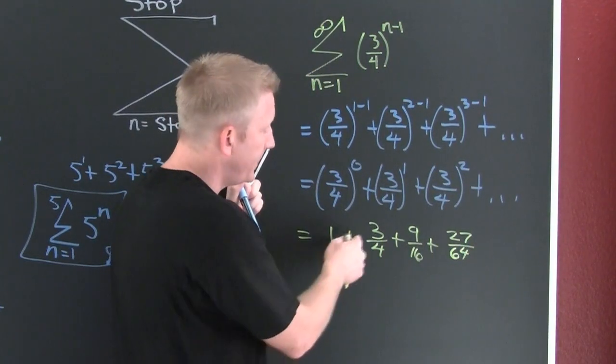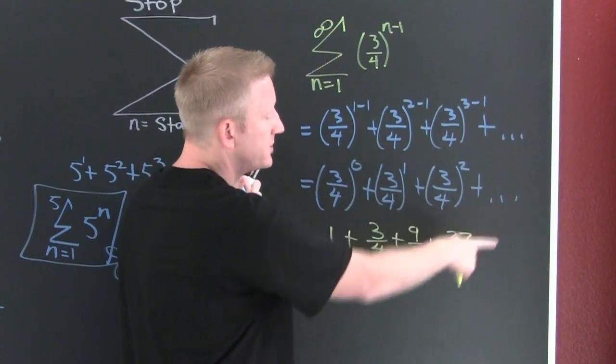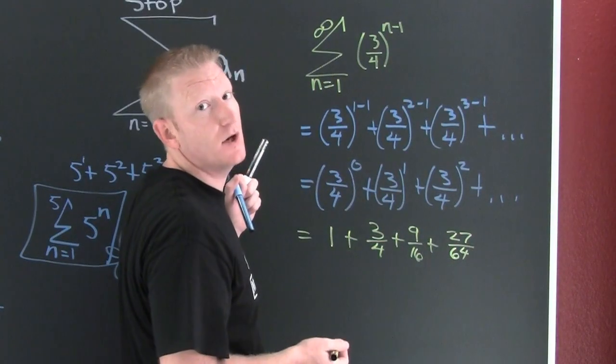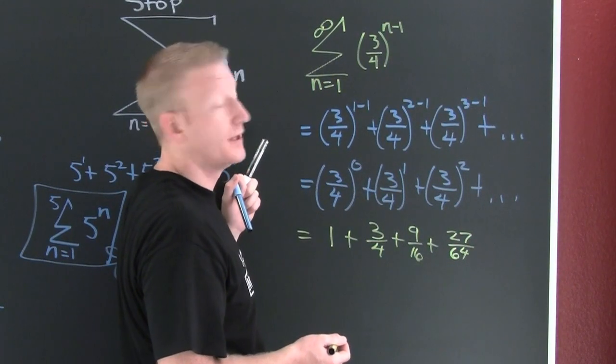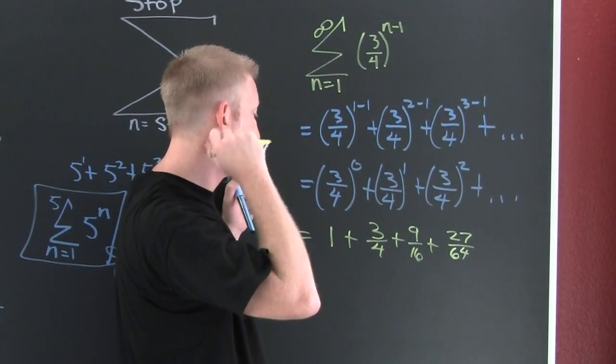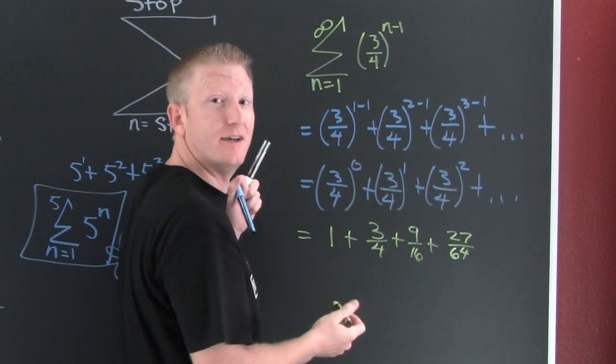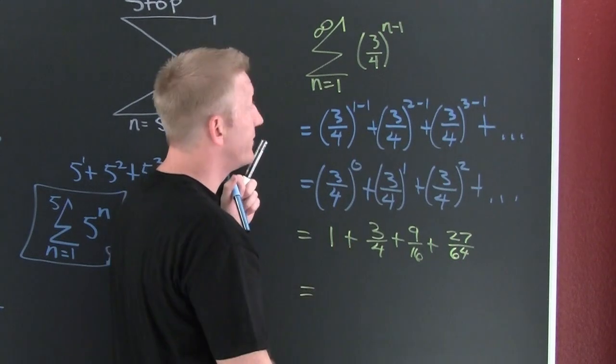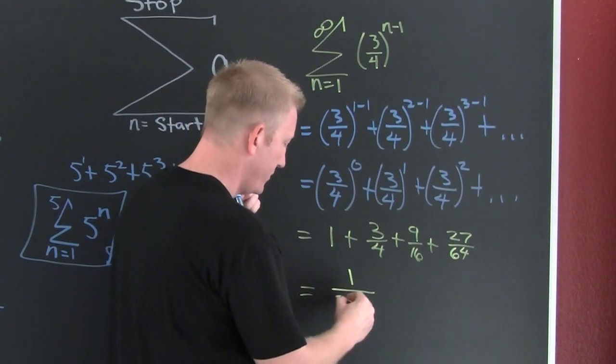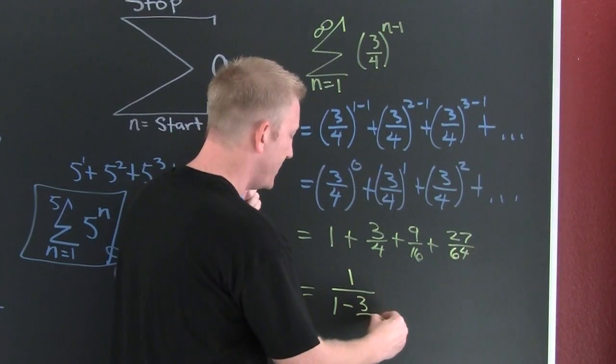What do you notice about these fractions? They keep getting smaller and smaller and smaller and eventually come so close to zero that you'll be essentially adding nothing and then this series will converge. And then what will it converge to? One over one minus three fourths.